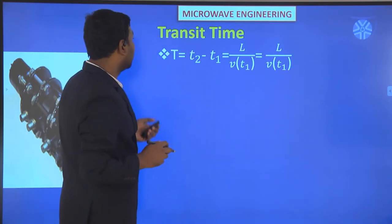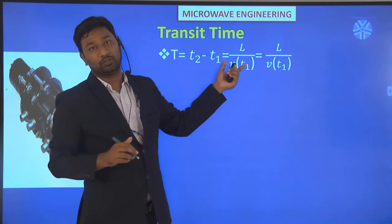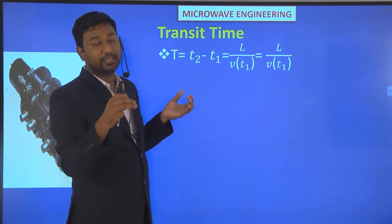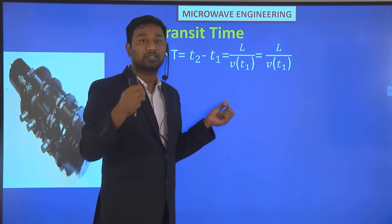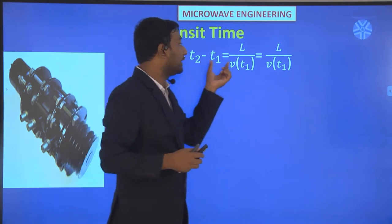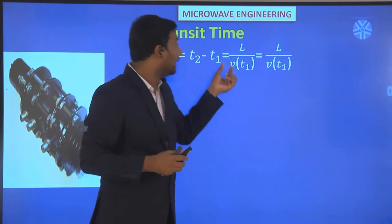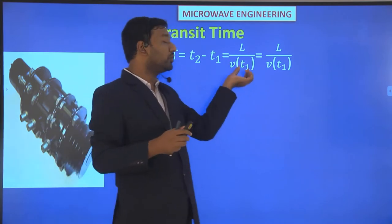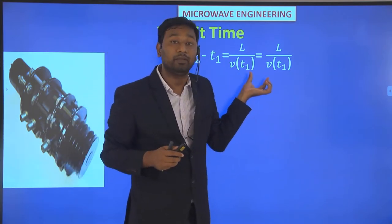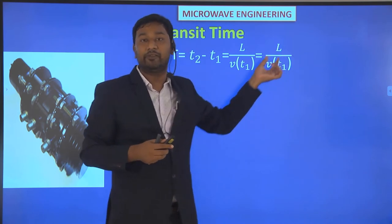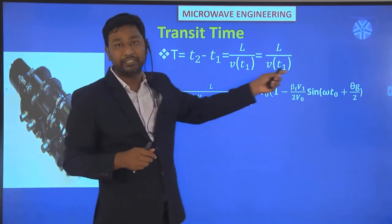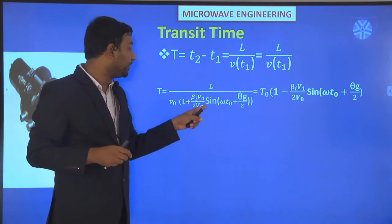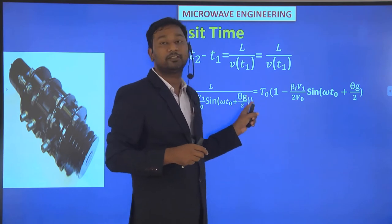Now we will calculate the transit time. Transit time T equals T2 minus T1, where T1 is when the electron leaves the buncher cavity and T2 is when it enters the catcher. T2 equals distance divided by velocity, which is L divided by vT1. We place the value of vT1 equals V0 times (1 plus β_i·V1 / 2V0) times sin(ωt0 plus θ_G/2).